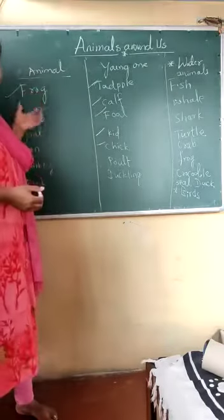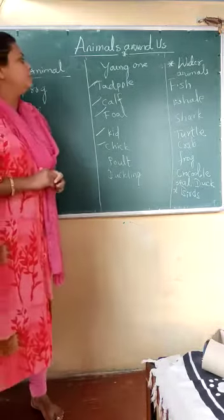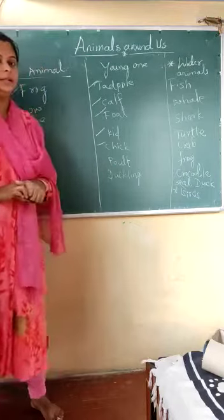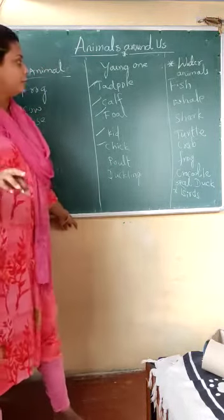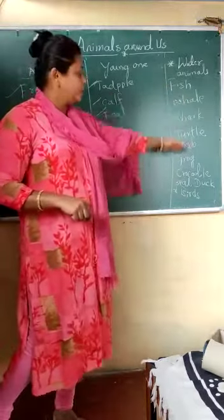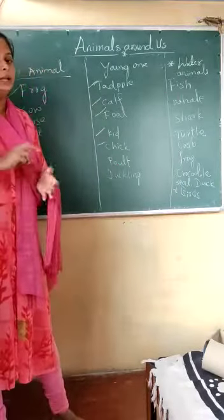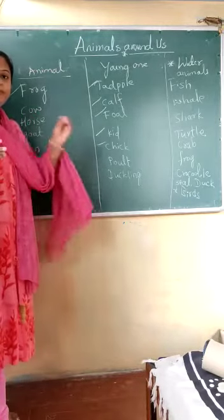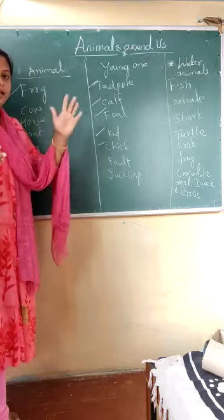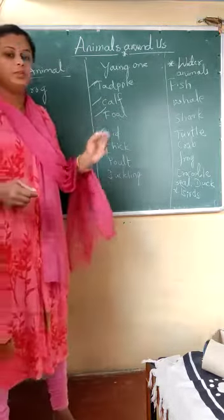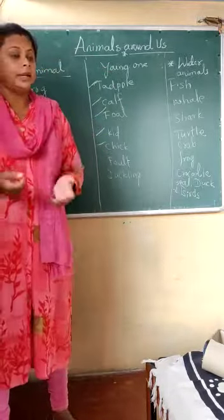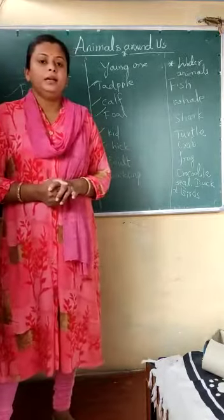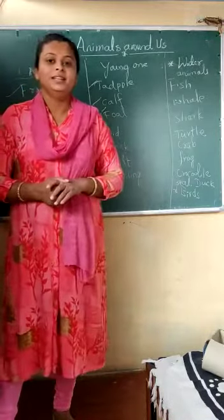So this is how we can know the young ones of animals and birds. This was the last video of this topic. I hope you all have understood what we discussed. Before ending, I want to give you some homework: write down the question — what are water animals and give examples — then write down any five animals and their young ones. I hope you will do this homework. Keep enjoying and understanding, and let us meet in the next video. Till then, take care, bye.